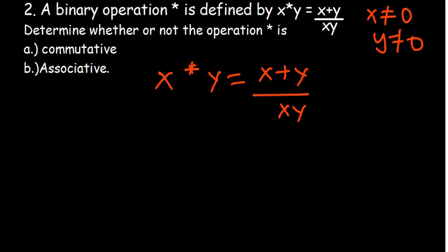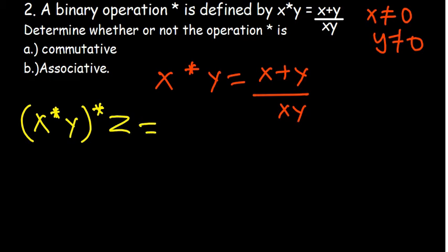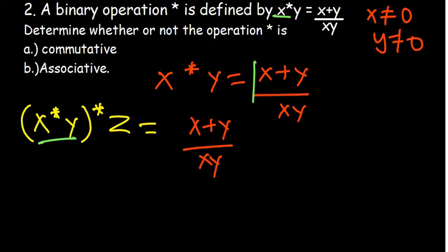Finally, we check whether this operation is associative. We introduce a third letter z. For (x★y)★z, we substitute: where there is x we put x★y, which equals (x plus y) over xy, and where there is y we put z. So we get: ((x plus y)/xy) plus z, all over ((x plus y)/xy) times z.